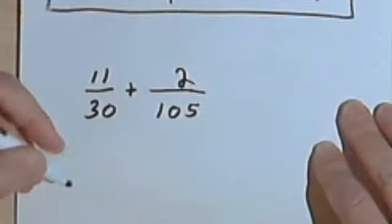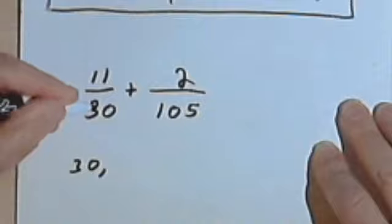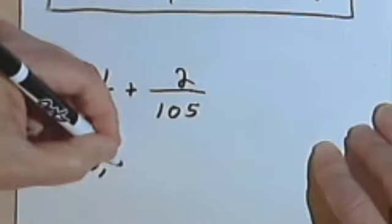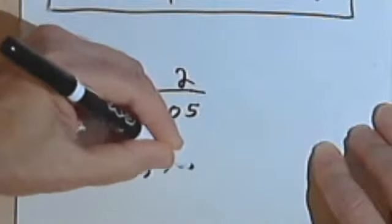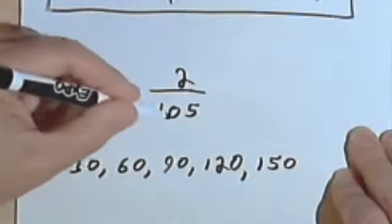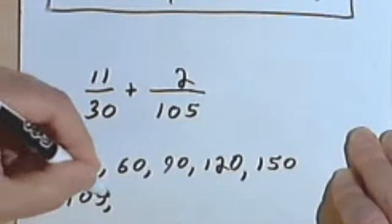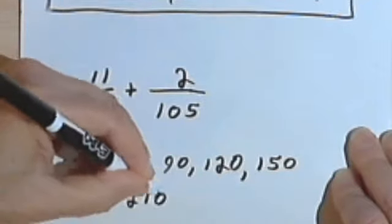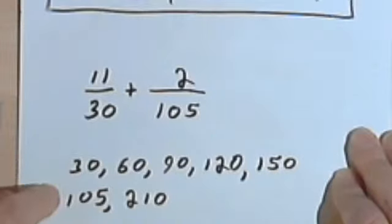One way we could do this is we could write out a list of the multiples of 30. So 1 times 30 is 30, and then 2 times 30 is 60, and 3 times it is 90, 4 times is 120, 5 times 30 is 150, and so on. And then we'll do the same thing for the 105. So there's 105, 2 times 105 is 210. And we're looking for a number that appears in both of these rows of numbers. We haven't gotten there yet.